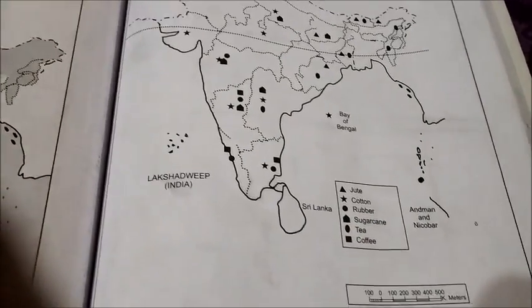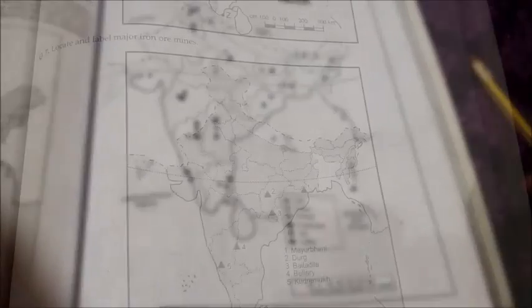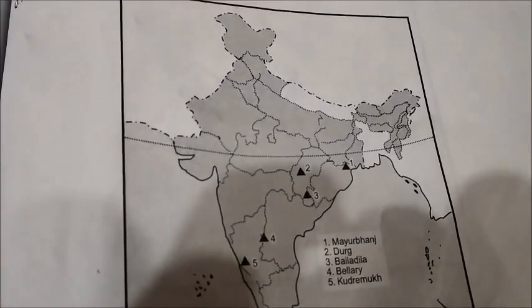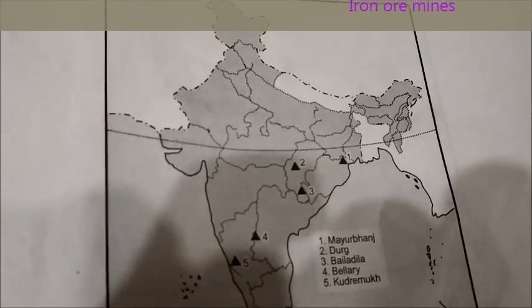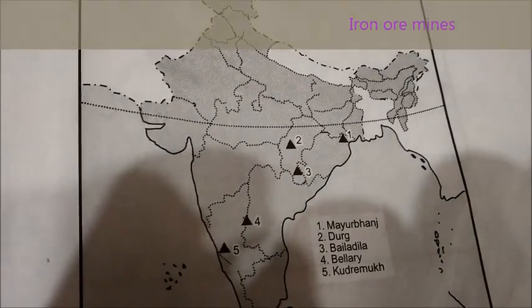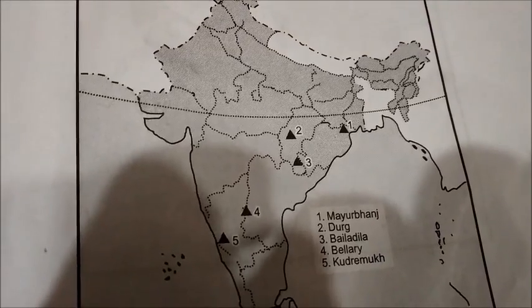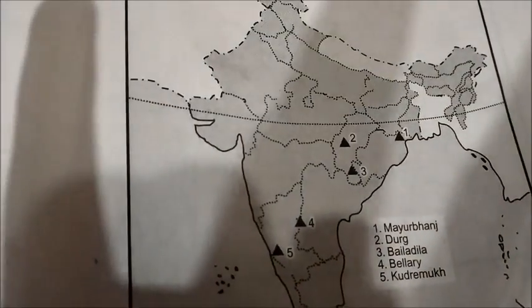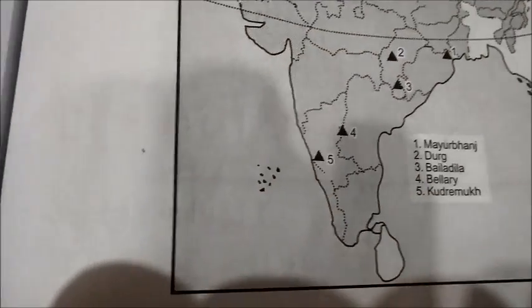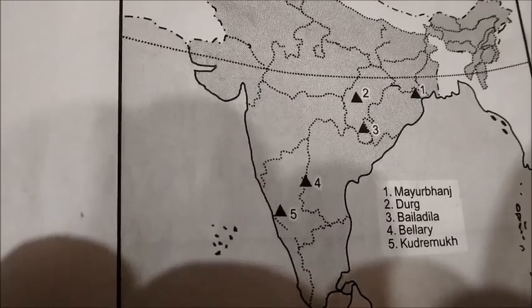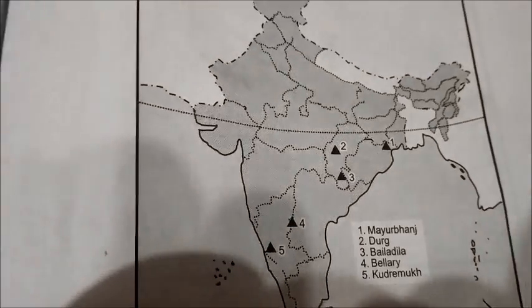Now let's look at the major iron ore mines in India. Mayurbhanj is located in Orissa. Durg and Bailadila are located in Chhattisgarh. Bellary and Kudremukh are located in Karnataka. Usually in these two to three states you find the major iron ore mines.